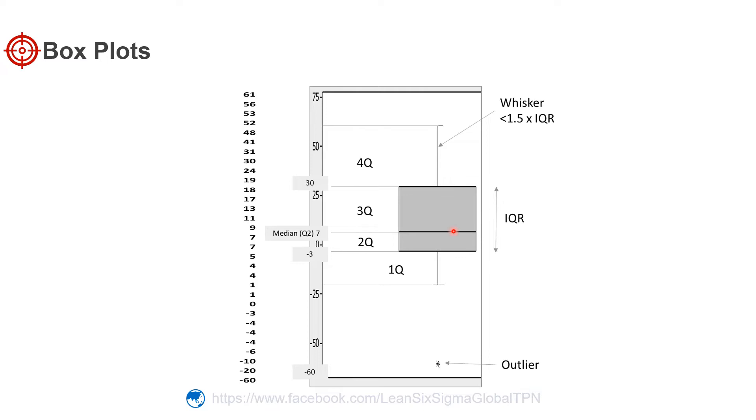The lower edge of the box is the first quartile - 50 percent of data points are below this line. The top of the box is the third quartile - 75 percent of the data points are below this line.